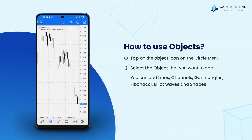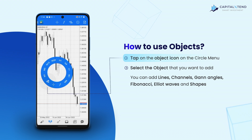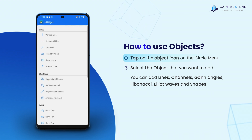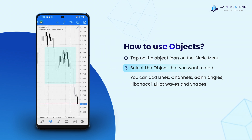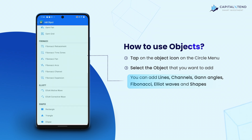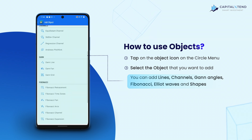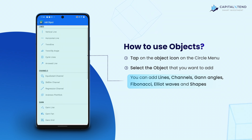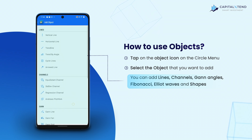To add objects on the chart screen, tap on the object icon on the circle menu. Go to the objects list and tap on the object that you want to add. You can add lines, channels, Gann angles, Fibonacci, Elliott waves, and shapes. Scroll down to see them all.